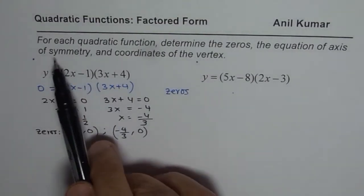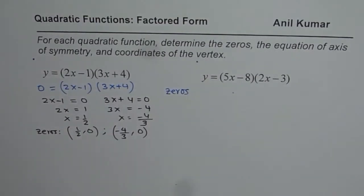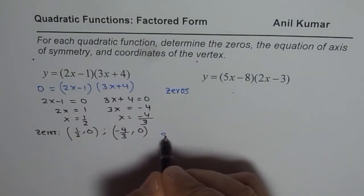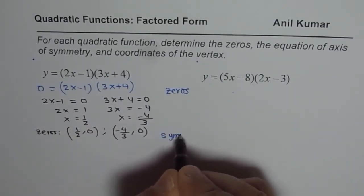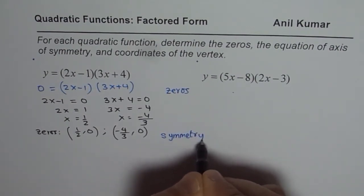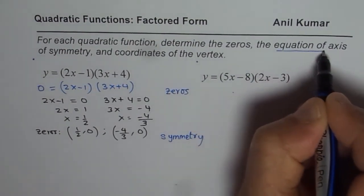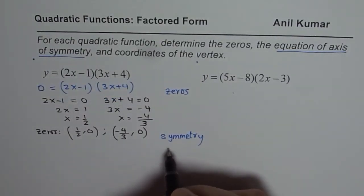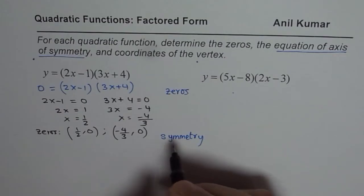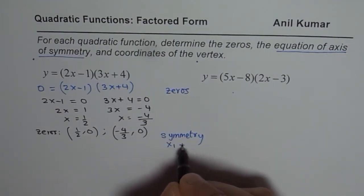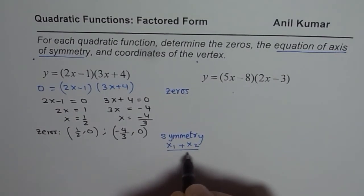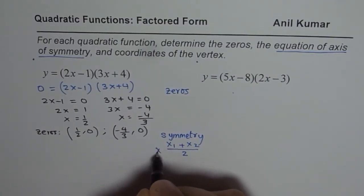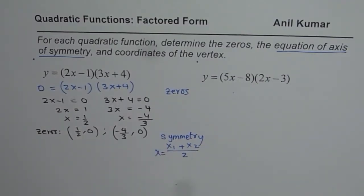The second thing to find is the axis of symmetry. The equation of the axis of symmetry is the average value between the zeros. So if zeros are at x1 and x2, then add these two values and divide by 2 — that value of x is the axis of symmetry.